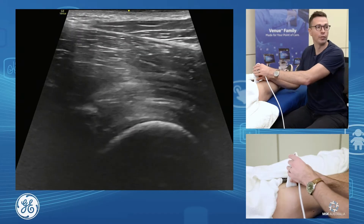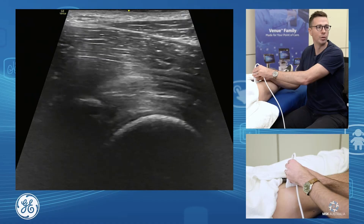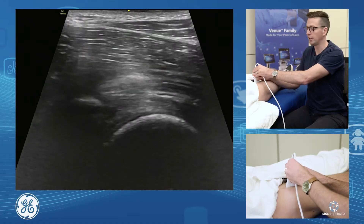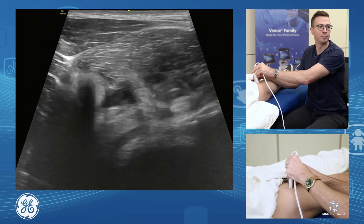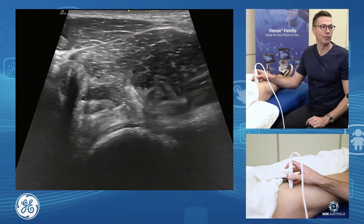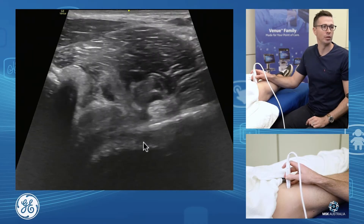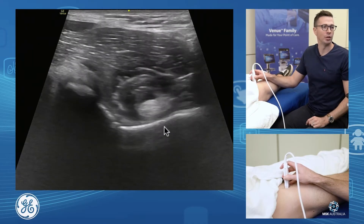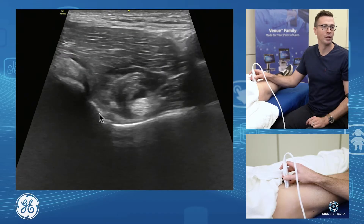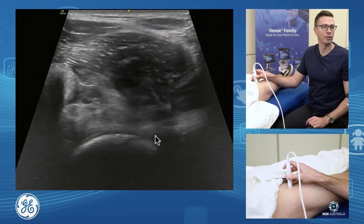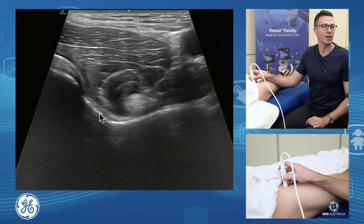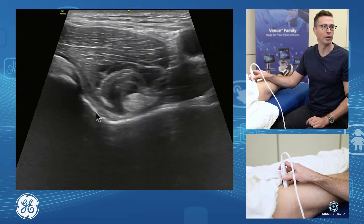From the front of the joint itself, we're going to get on that femoral head-neck junction and just turn our probe 90 degrees. Here we are on the femoral head, and as we scan up onto the iliopectineal eminence of the acetabulum — so femoral head, acetabulum, and our iliopsoas sitting on top.